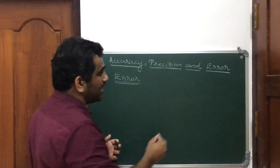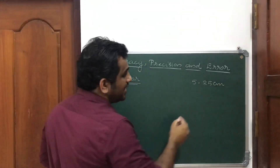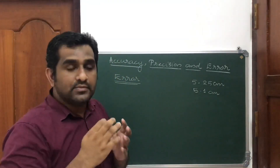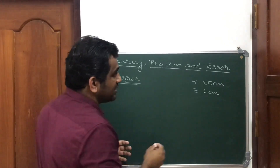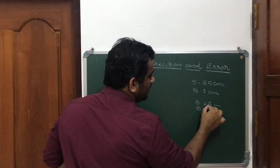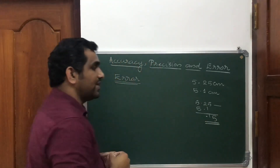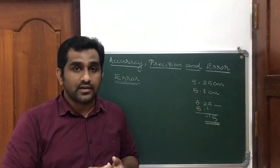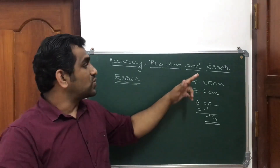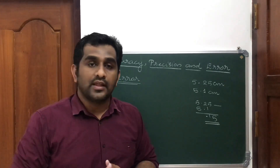For example, we measure a pencil. The true value is 5.25 cm and the measured value is 5.1 cm. The error is 5.25 minus 5.1, which equals 0.15 cm. This is the error in measurement — the difference between the true value and the measured value.